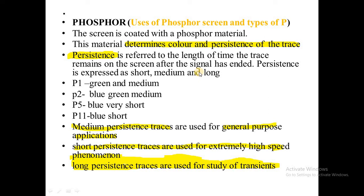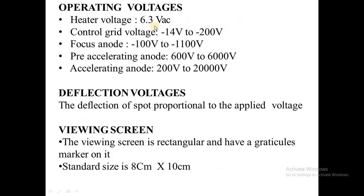Persistence is the length of time the trace remains on the screen even after the signal has ended. We have phosphor types: P1 is green with medium persistence, P2 is blue-green with medium persistence, P5 is blue with very short persistence, and P11 is blue with short persistence. Medium persistence traces are used for general purpose applications, short persistence traces are used for extremely high speed phenomena, and long persistence traces are used for the study of transients.